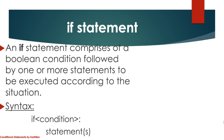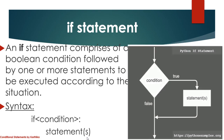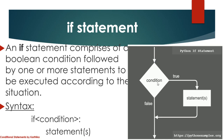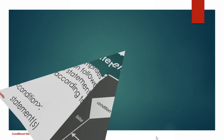The syntax starts with `if condition:` — the colon is very important; without the colon your program will not work. Then we have the statements. In the flowchart, when the condition is true it executes the set of statements and comes to the next statement. When the condition is false, since there are no statements given, it simply comes to the next statement. This is how the simple if statement works.